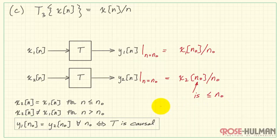Now, we need to find out whether or not the time index expression is always less than or equal to n0, which it is. Therefore, T3 is also causal.